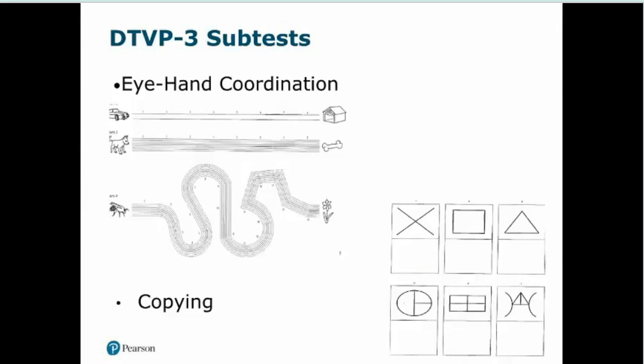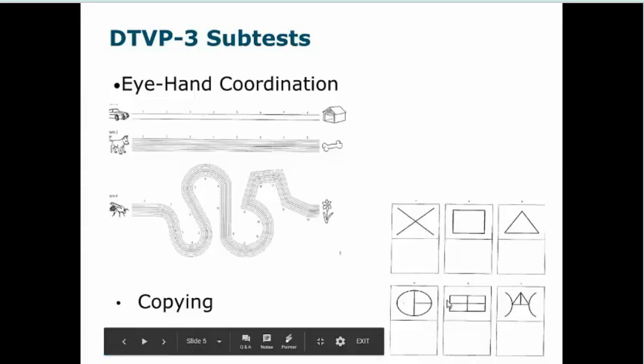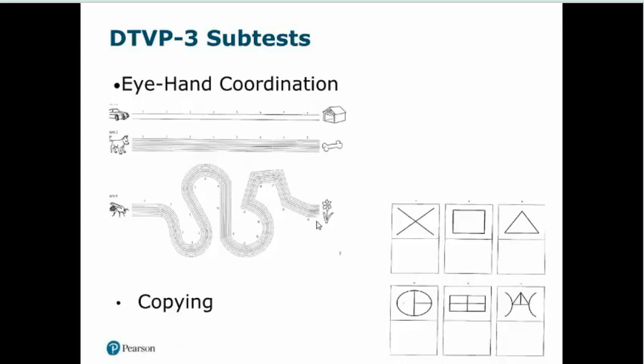Subtest 1 is eye-hand coordination, which looks at visual motor control — the child has to trace between the lines that get more complex as you go through. There are also some copying items. If you know the VMI, you'll see similarities: a shape to copy with space underneath. However, the DTVP3 jumps more quickly through developmental stages than the VMI and ends up with more complex drawings than the VMI.